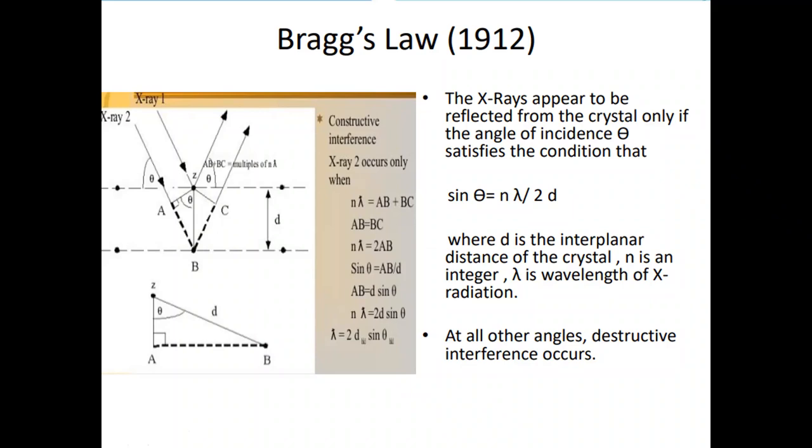And for constructive interference, the condition is that sin theta equals n lambda over 2d. And in this case, n is the integral. Integral is n number 1, 2, 3.